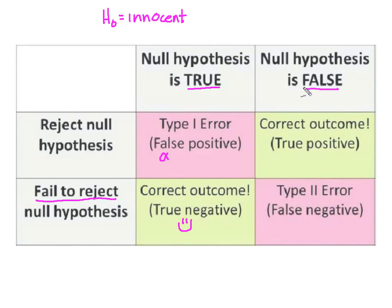So if everybody believes they're innocent, but in reality they are not innocent, then the correct decision is to reject the null. And this is a true positive and the correct outcome.